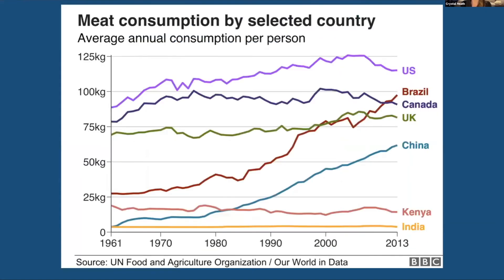Despite increasing awareness about animal suffering, pandemics, environmental damage, freshwater contamination, worker exploitation, and antibiotic resistance, per capita meat consumption continues to rise. A well-established empirical relationship called Bennett's Law shows that as people become wealthier, their diets shift from starchy staples to refined grains, fruits, vegetables, meat, and dairy. Projections based on Bennett's Law suggest a rise in wealth will lead to roughly a 100% increase in meat consumption between 2005 and mid-century.